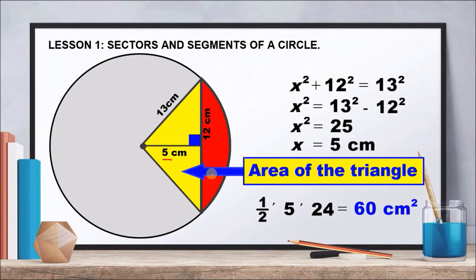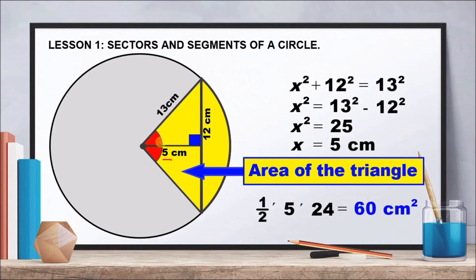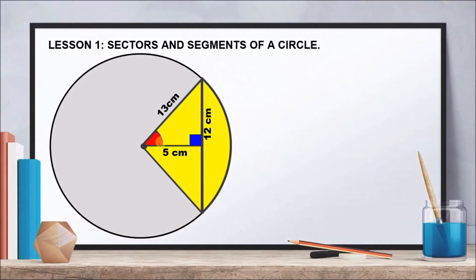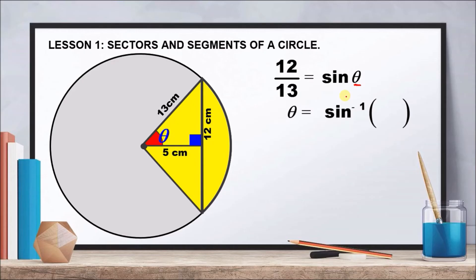To find the segment area, we must first find the sector area, then subtract the triangle area. The problem is we still don't have the central angle. Recalling from Grade 9, we can use inverse trigonometric ratios. We will use the inverse sine function. Since the angle is unknown, we need to apply inverse sine using a scientific calculator.